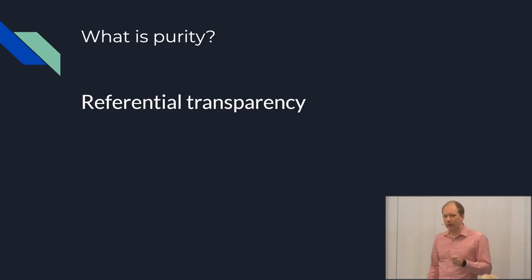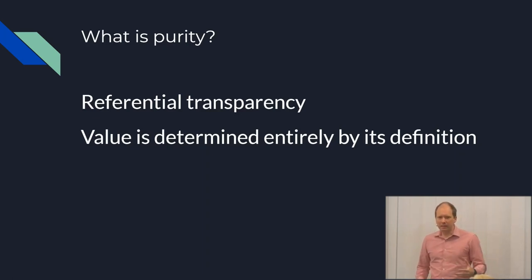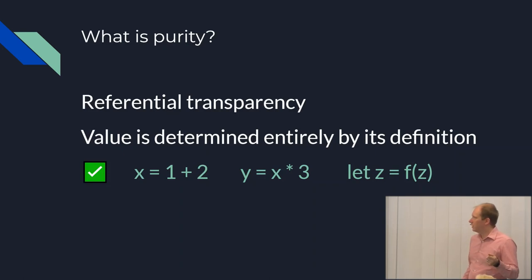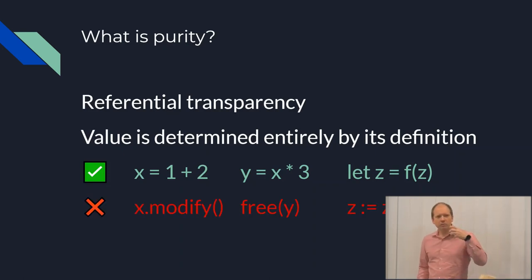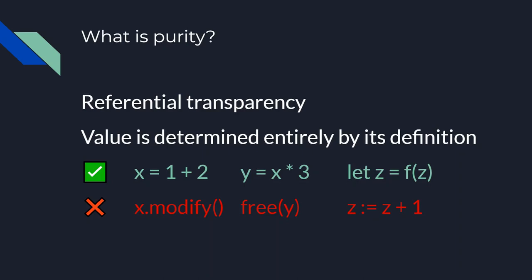Purity is not really about mutation as such. It's really about referential transparency — a value's meaning is determined entirely by its definition. In other words, you can freely factor things out, factor them back in, move them around, and when you change the code, it's not going to change the meaning. Here are examples of simple expressions that are referentially transparent — we even allow recursion, so it's fine that Z is defined in terms of itself. But it's not okay to go into an object and modify it, delete things, or redefine something like Z using an assignment operation.